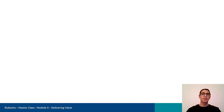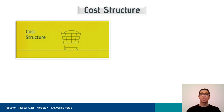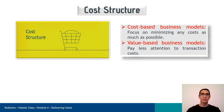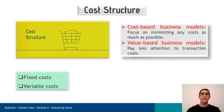Cost structure is the last block, because we need to predefine the other blocks to be able to estimate the cost of each. A company can follow a cost-based business model focused on minimizing costs as much as possible, such as through automation or outsourcing. On the other hand, a company can follow a value-based business model, which pays less attention to transaction costs, such as customization based on customer preferences. In addition, a company may have fixed costs — such as salaries and rents — or variable costs related to services or raw materials.